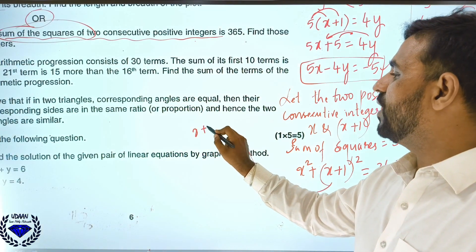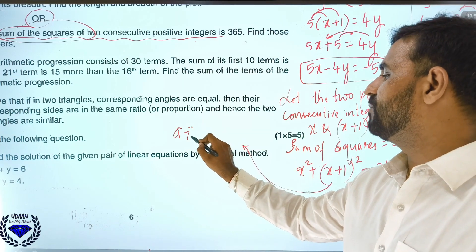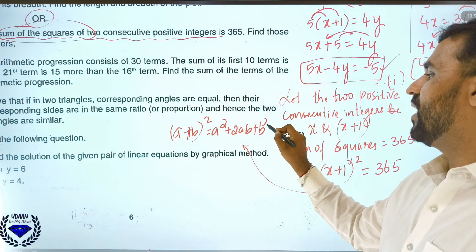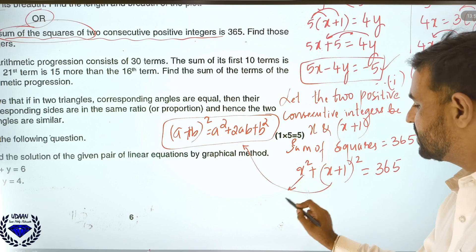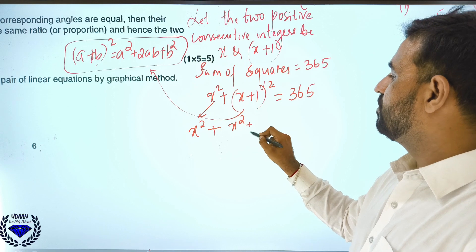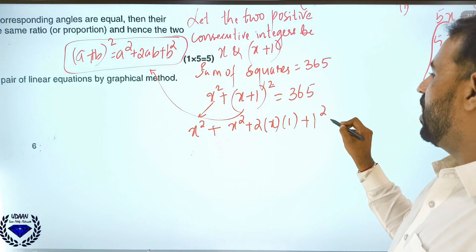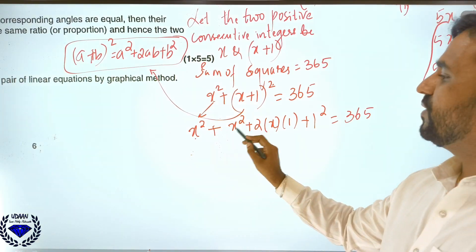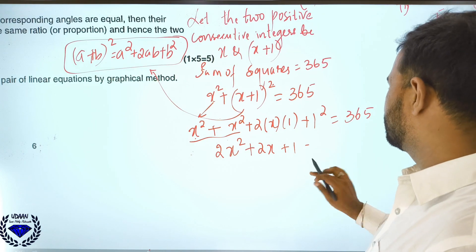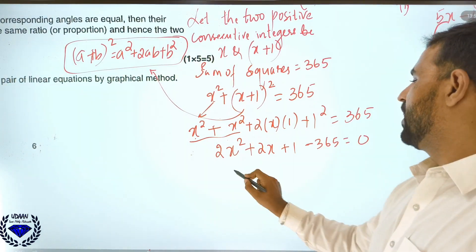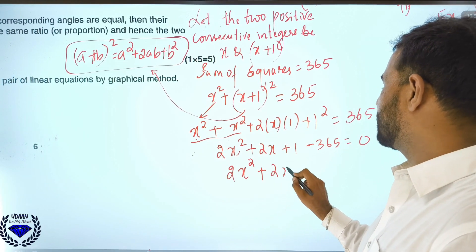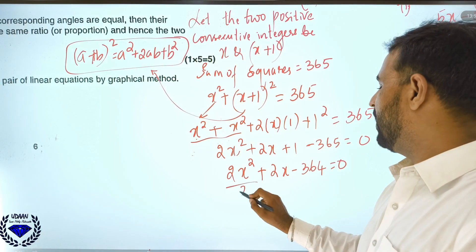Expanding using (a+b)² = a² + 2ab + b²: x² + x² + 2x + 1 = 365, which gives 2x² + 2x + 1 − 365 = 0, so 2x² + 2x − 364 = 0. Dividing all terms by 2: x² + x − 182 = 0.